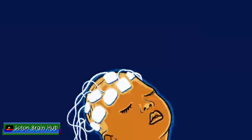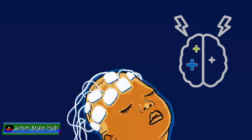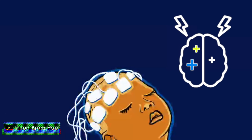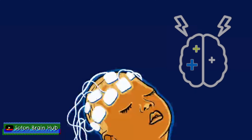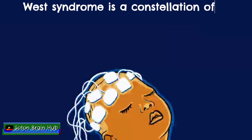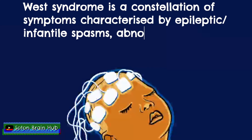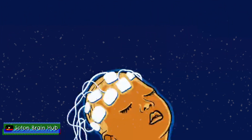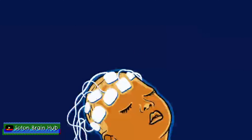Infantile spasms are a type of epilepsy syndrome that typically presents in infancy. In more than half of cases, infantile spasms are associated with an underlying pathology. The spasms are the characteristic seizure type seen in West syndrome, which is defined by a combination of infantile spasms with a classical EEG pattern known as hypsarrhythmia, as well as developmental plateau or loss of previously acquired skills.